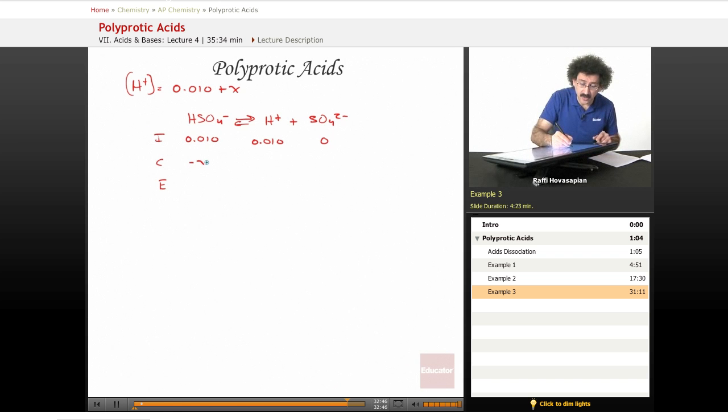SO4²- starts at 0. The change is minus X, plus X, plus X. We get 0.010 minus X for HSO4-, 0.010 plus X for H+, and X for SO4²-.